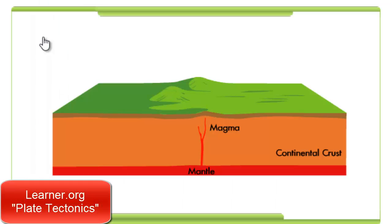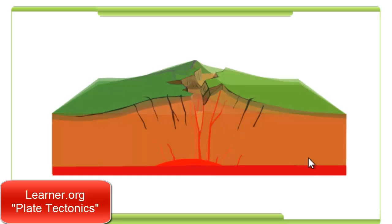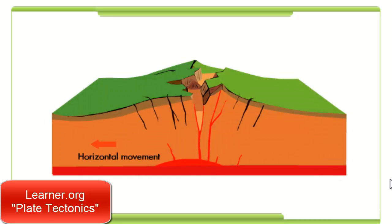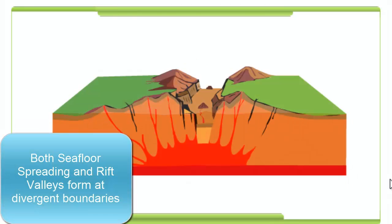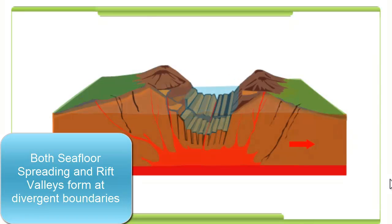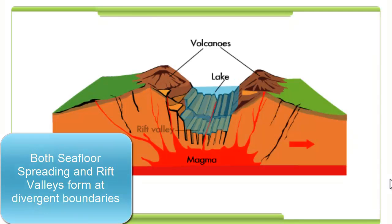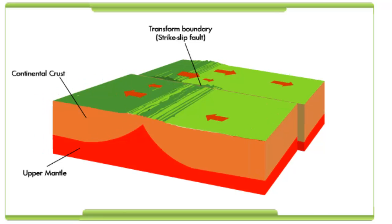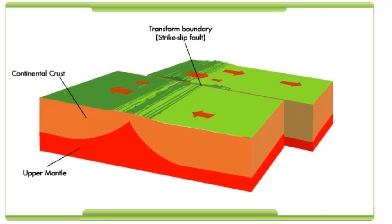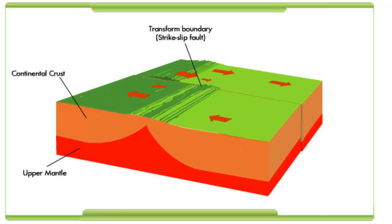This animation shows a rift valley forming where two continental plates are splitting apart. Divergent boundaries are where seafloor spreading takes place. Here you can see an animation of transform boundaries where the plates are grinding past each other. A lot of earthquakes are generated around transform boundaries.